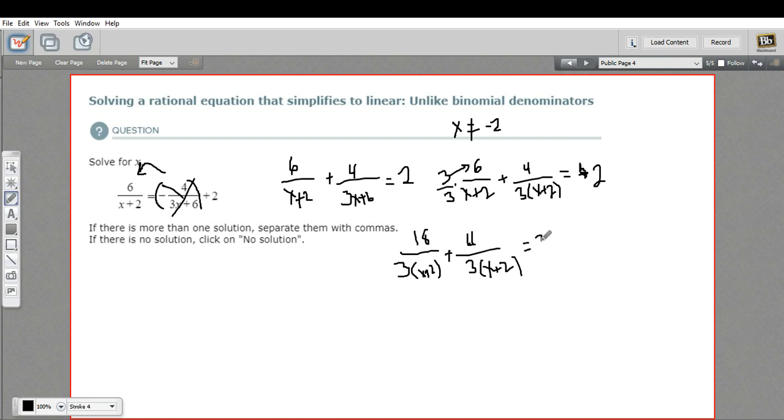And that all equals 2. Well, we have common denominators so we can do the addition. 18 plus 4, make that look like a 4 better. Alright, 18 plus 4 is 22. So I've got, I'll write it over here, 22 over 3 times x plus 2 equals 2.